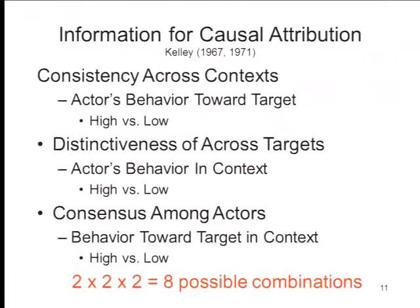Kelley argued that from multiple observations of behavior we extract three kinds of information that, when fed into the covariation calculus, tell us why things happened. The first is consistency — the consistency of the actor's behavior toward a particular target across multiple contexts. High consistency means the actor always behaves the same way toward the target no matter the context; low consistency means the actor's behavior toward the target varies from one situation to another.